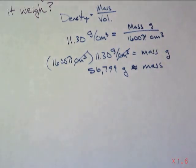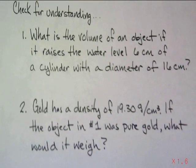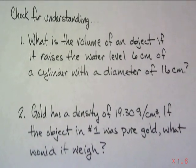So hopefully that will help you out, and I've got only two problems for you today. Here we go. So what is the volume of an object if it raises the water level 6 centimeters of a cylinder with a diameter of 16 centimeters? And gold has a density of 19.30 grams per centimeter cubed. If the object in the first problem was pure gold, how much would it weigh?